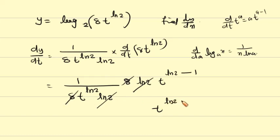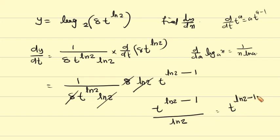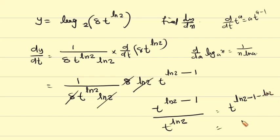After simplification, t^(ln 2 - 1) divided by ln 2, and ln 2 cancels, giving t^(ln 2 - ln 2) which equals t^0... simplifying further, the result becomes t^(-1) equals 1 over t. So dy/dt equals 1/t.